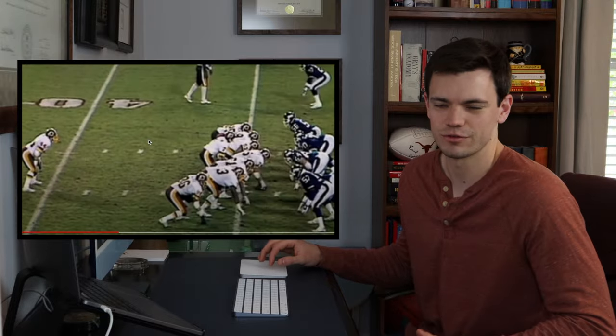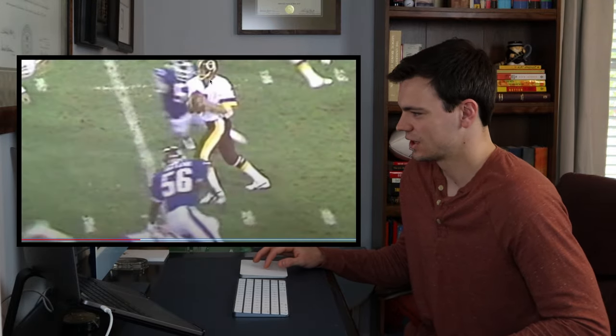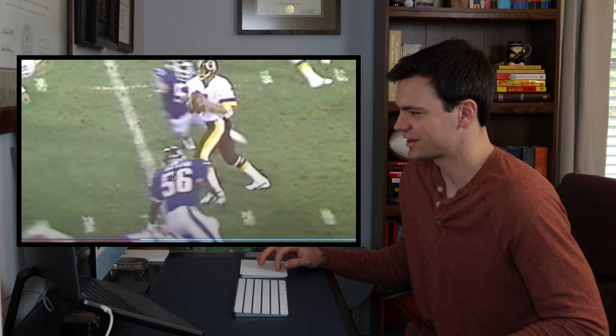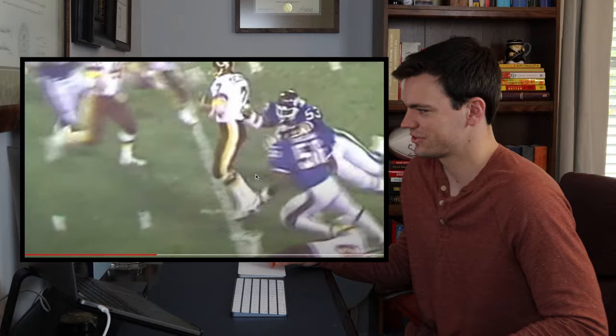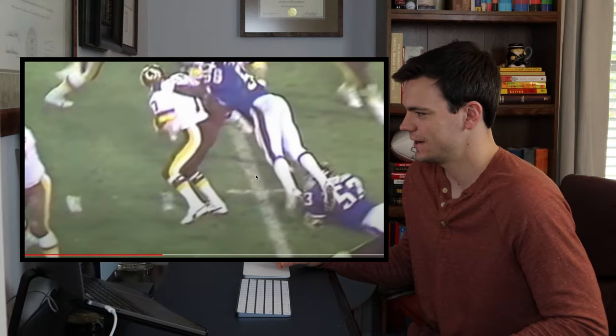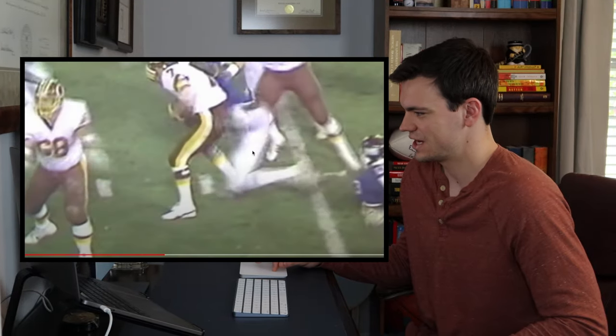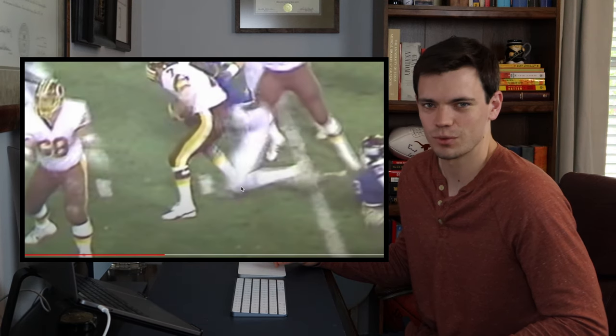Let's take a look at the injury from an angle that we can actually see what happens. So here's Theismann, and here's Lawrence Taylor, number 56. He's going to be the one that falls on Joe Theismann and causes the injury. Here comes Taylor, and he basically jumps on Theismann's back, and right here you see his leg is coming in, and it hits Joe Theismann's leg with pretty severe force.